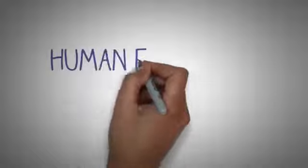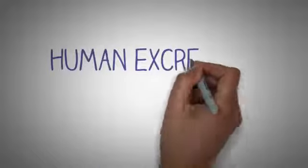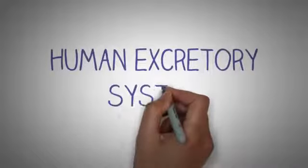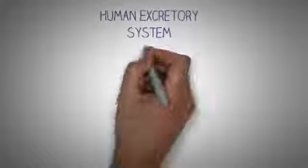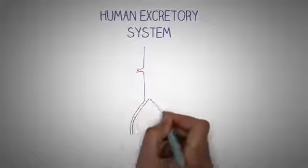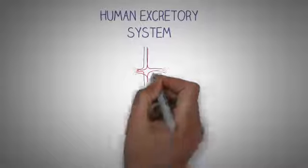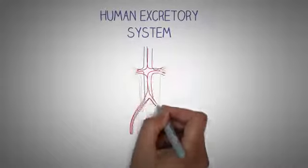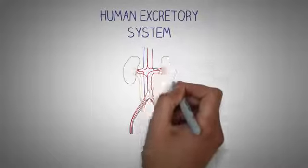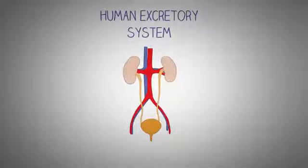Hello and welcome to Medsimplified. The human excretory system is one of the most important organ systems of the body that performs the vital function of filtering your blood and removing excessive and unnecessary materials from the body. This helps to maintain an internal chemical homeostasis and prevent damage to the body. In this video, we are going to study about the human excretory system.